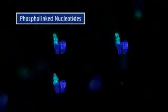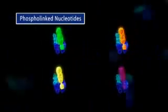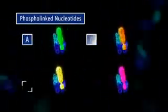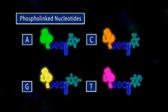The first is phospholinked nucleotides. To visualize polymerase activity, a different colored fluorescent label is attached to each of the four nucleotides: A, C, G, and T. In contrast to other sequencing approaches, our phospholinked nucleotides carry their fluorescent label on the terminal phosphate rather than the base.